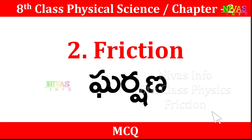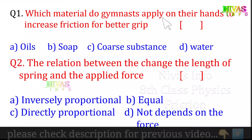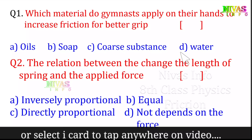First question: which material do gymnastics apply on their hands to increase friction for better grip? Options are: oils, soap, coarse substance, water.